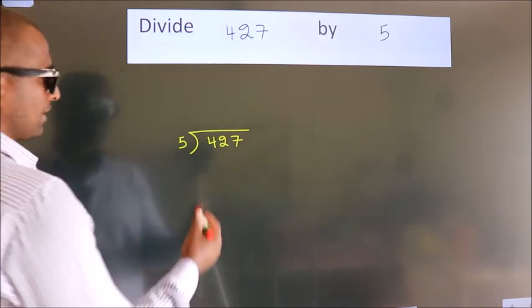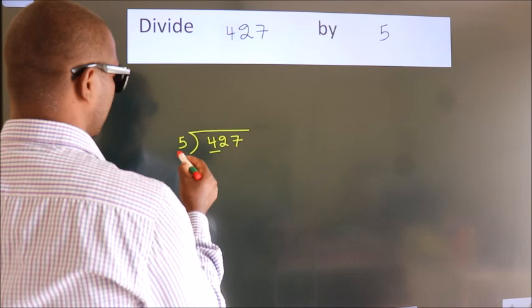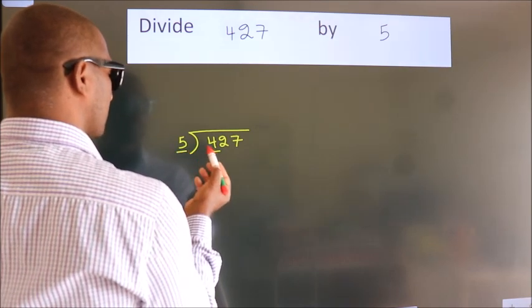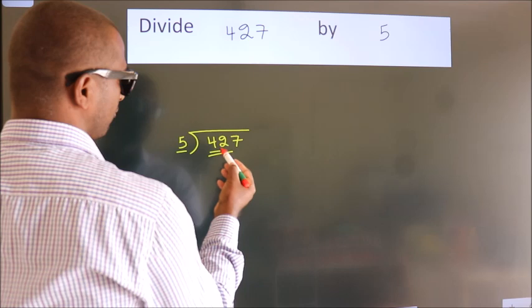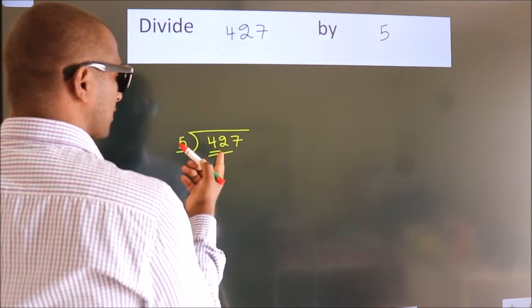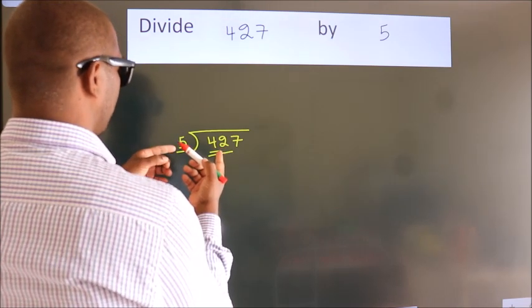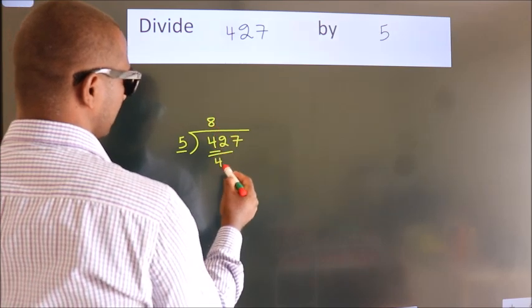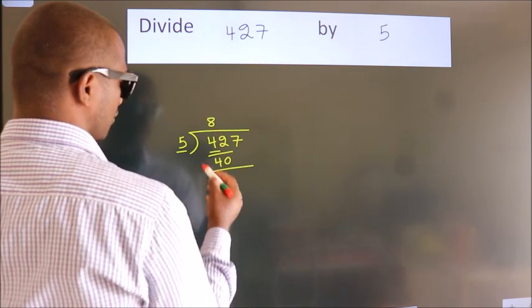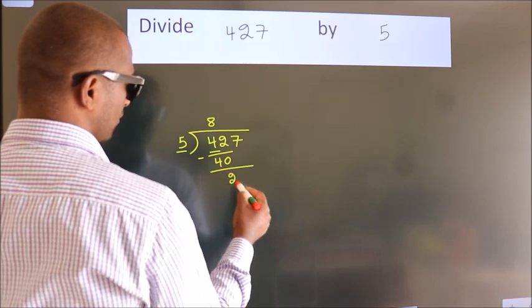Next. Here we have 4, here 5. 4 is smaller than 5, so we should take 2 numbers, 42. A number close to 42 in the 5 table is 5 times 8, 40. Now we should subtract. We get 2.